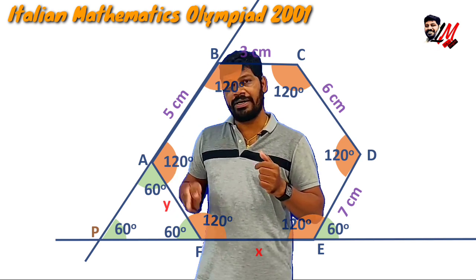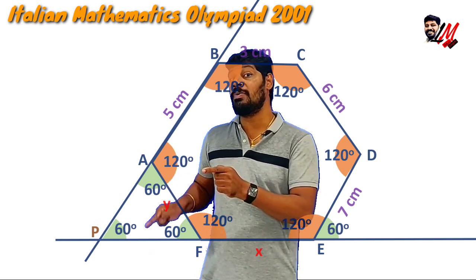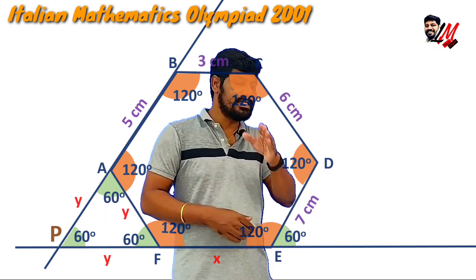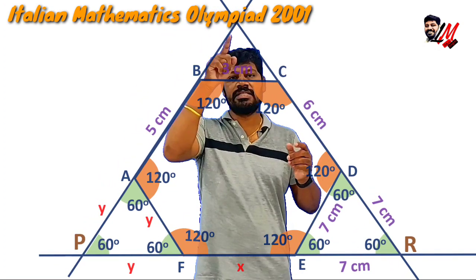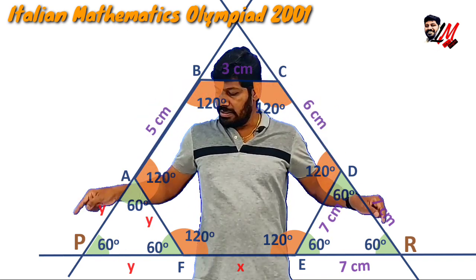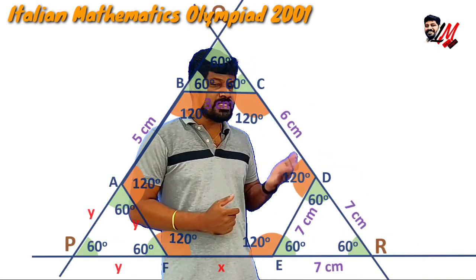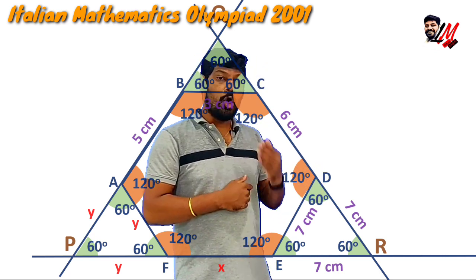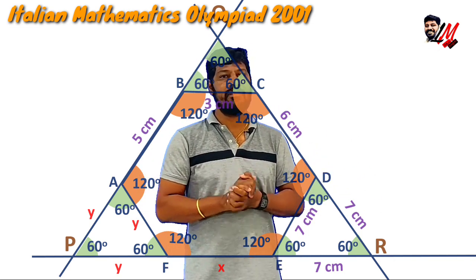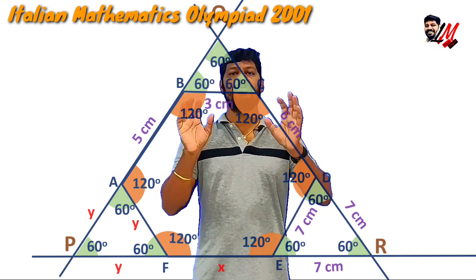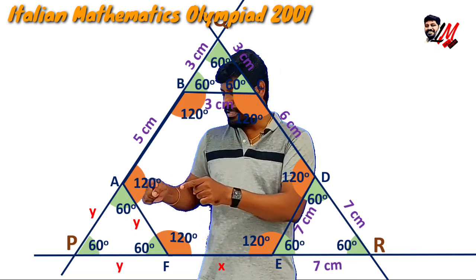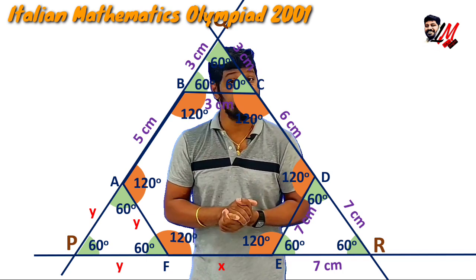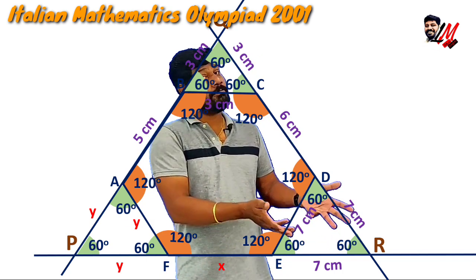Now since this part is X and this part is Y, for this equilateral triangle each side is going to be Y. Coming to the next extension, we extended EF and AB, and now we also extend CD in both directions. You can clearly see all three extended lines form a triangle. Let us call its vertices P, Q, R. The side corresponding to BC gives an equilateral triangle with each side 3, and the side corresponding to DE gives an equilateral triangle with each side 7.